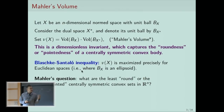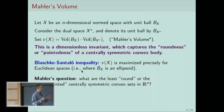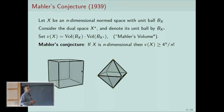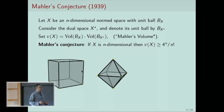Mahler's question, roughly speaking, is: what is the other extreme of this inequality? What is the least round, or most pointed, centrally symmetric convex body in R^n? The conjecture is that mu of X is bounded below by 4^n over n factorial, which is exactly the volume product of the cube. So the cube should be the least round convex body in the class of centrally symmetric convex domains in n-dimensional space.